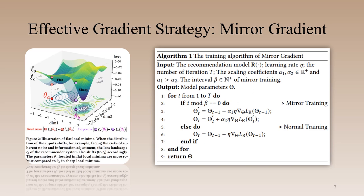Specifically, we first present an intuitive insight into why a recommender system should consider flat local minima, which are located in large weight space regions with very similar low loss values. In this figure, LO represents the original loss landscape, which is associated with the model's parameters, architecture, data distribution, etc.